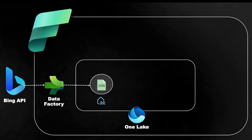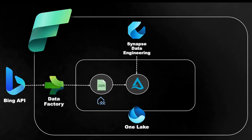Once the raw data gets stored in the Lake Database, we will be processing the JSON data — in other words, transforming the JSON data into a proper table structure with a predefined schema, and this table will be stored as a Delta table. The process of transforming the raw JSON file to a structured Delta table will be done using a tool called Synapse Data Engineering, which is also part of Microsoft Fabric. Using this tool, we will be creating Spark Notebooks for transforming the raw JSON file to a clean Delta table, which will also be stored in the Lake Database — but as a table structure rather than a file structure.